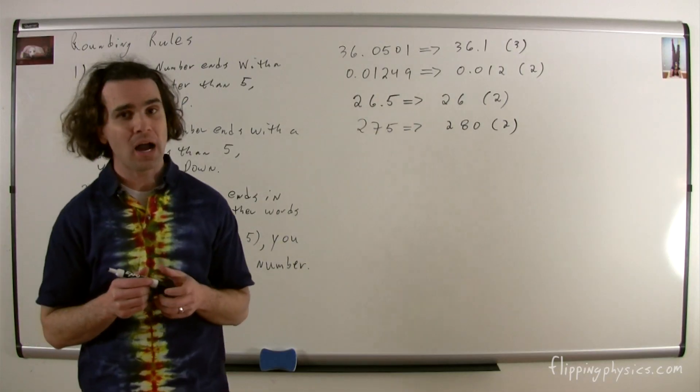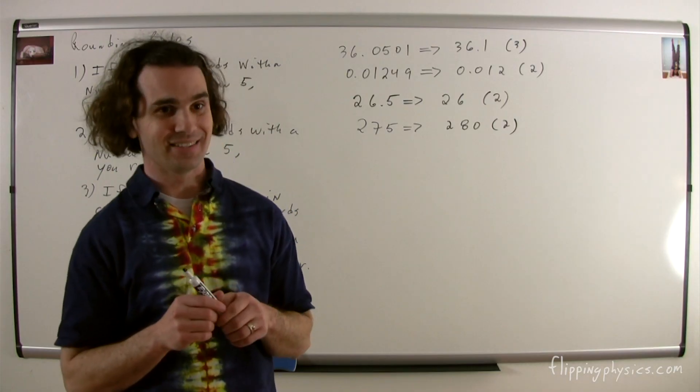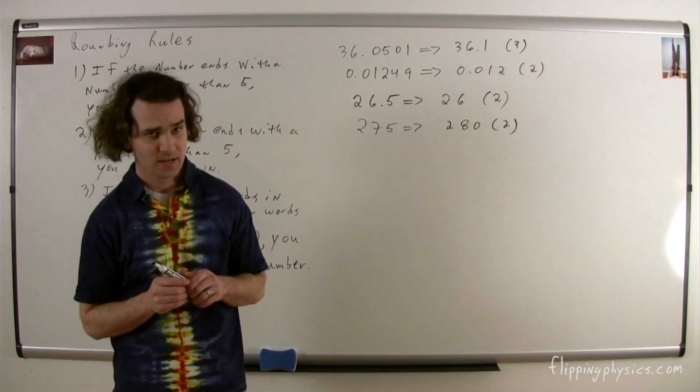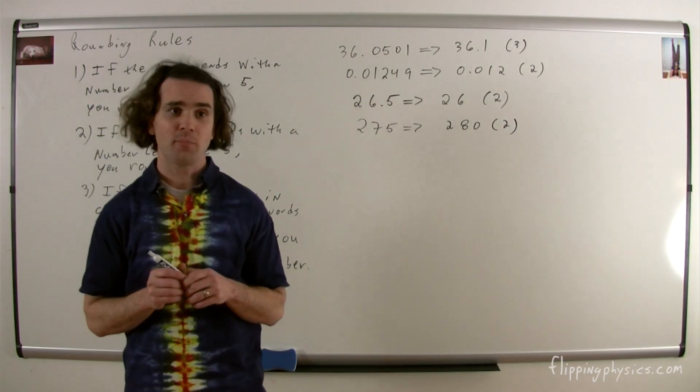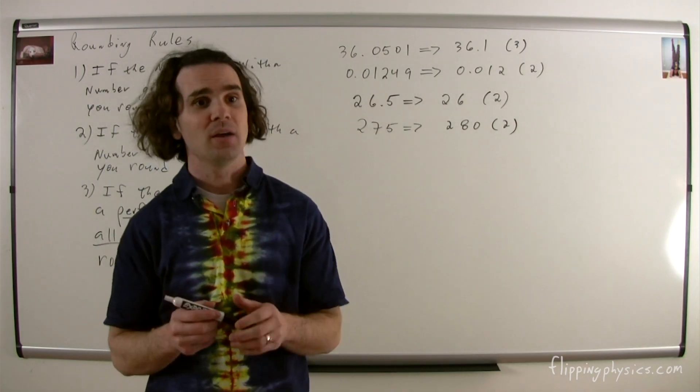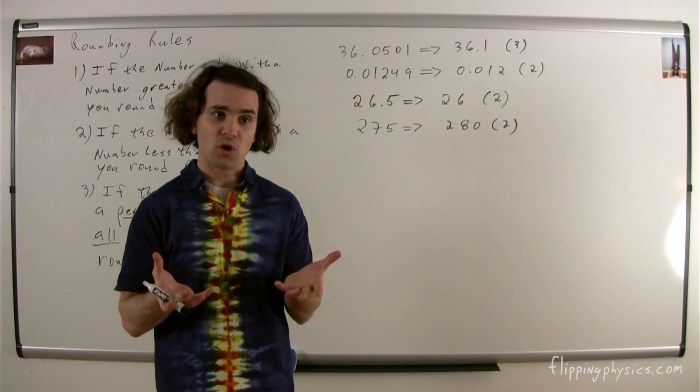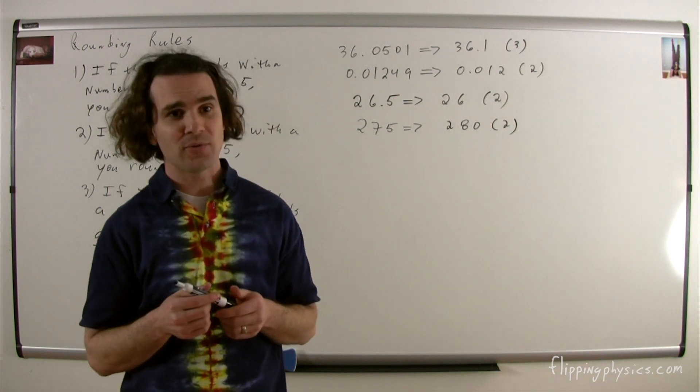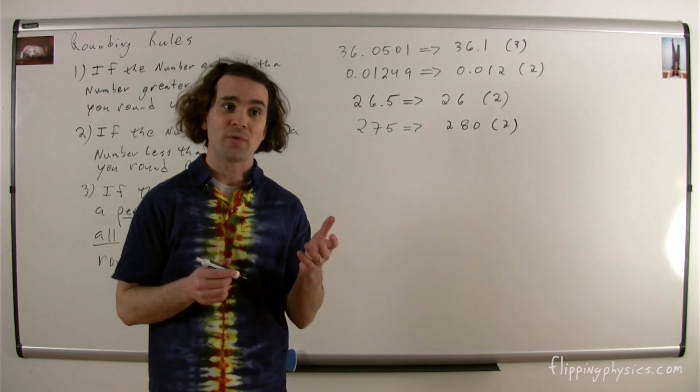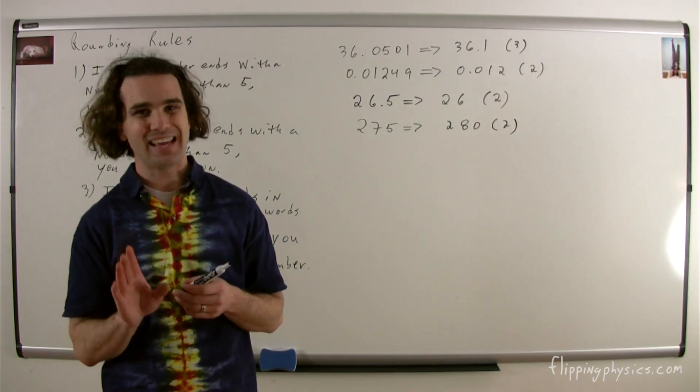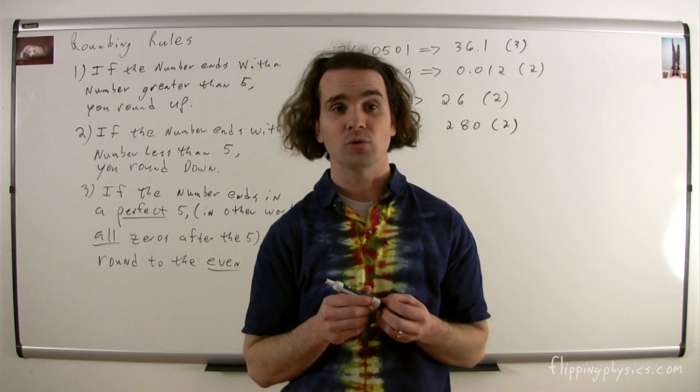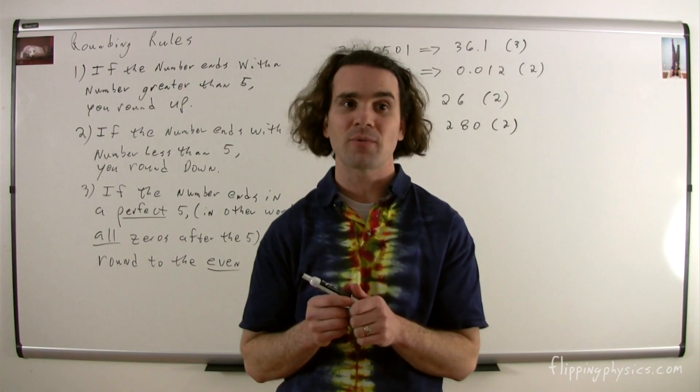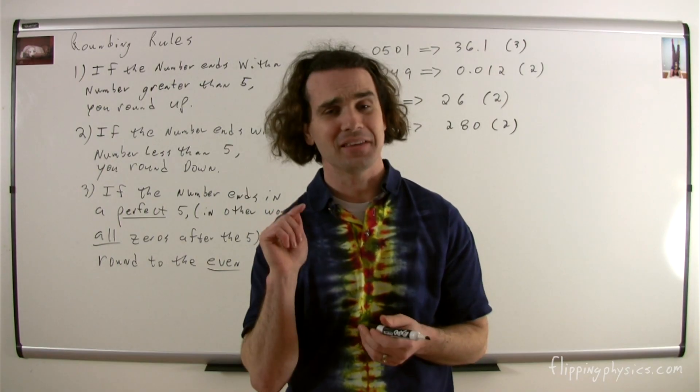It is very important that you understand why the arcane rounding rule exists. It's because of statistics. If we rounded up when ending in a perfect 5 every time, then all of the data would actually be artificially increased. With the arcane rounding rule, 50% of the time we round up, and 50% of the time we round down, and the data is not artificially inflated. Also, this is how I remember the arcane rounding rule. It is a doubly odd rule because it is doubly odd that we round to the even number and not the odd. Yes, that is how I remember it.